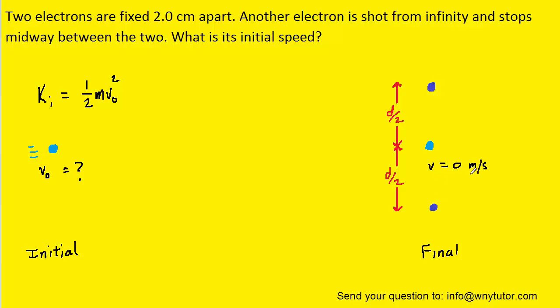Now, because it comes to rest, the final velocity will be zero. That means there is no longer any kinetic energy, but there is electrical potential energy. And it turns out that there's electrical potential energy between these two electrons as well as between those two electrons. So we have to combine those two electrical potential energies.